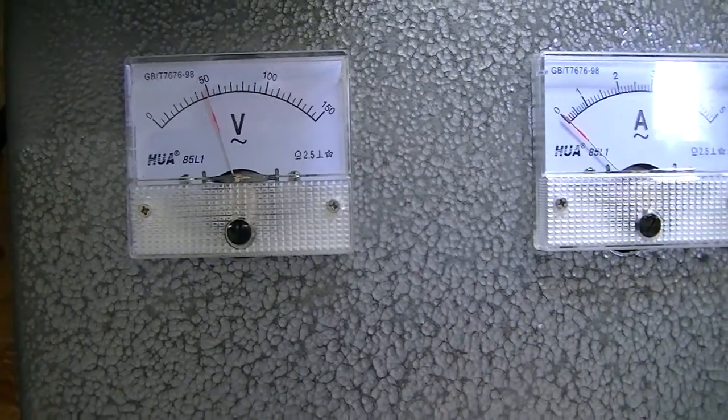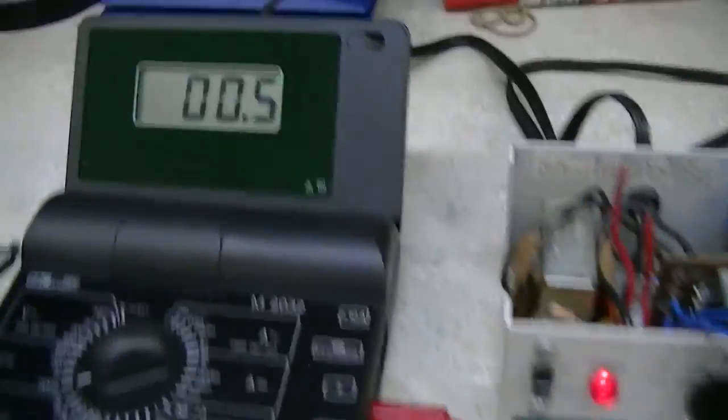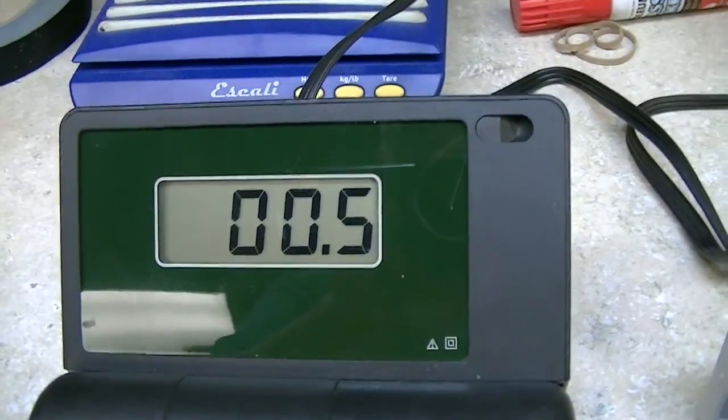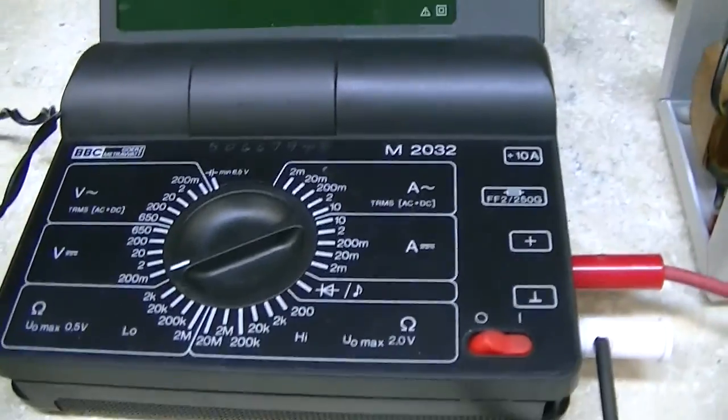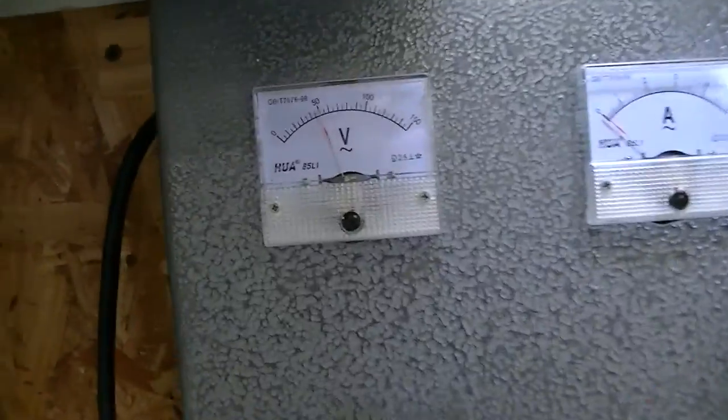So I'm up to 50 volts now and I'm on the 200 millivolts scale and I'm showing about 0.5 millivolts on the meter, so so far so good.